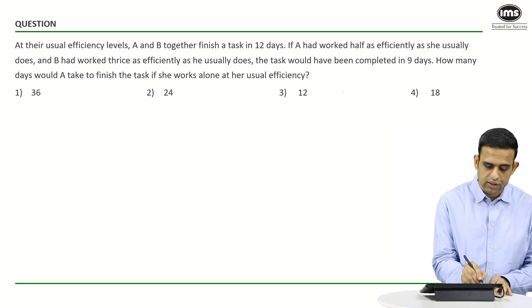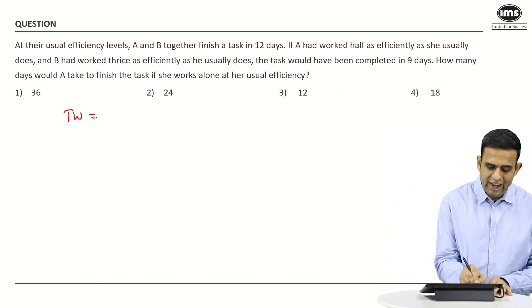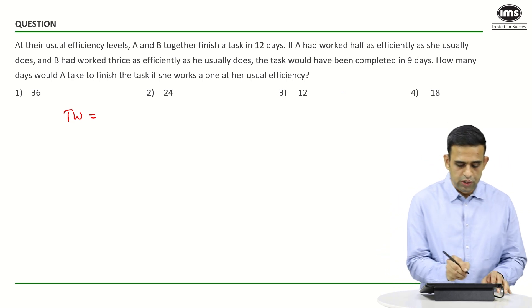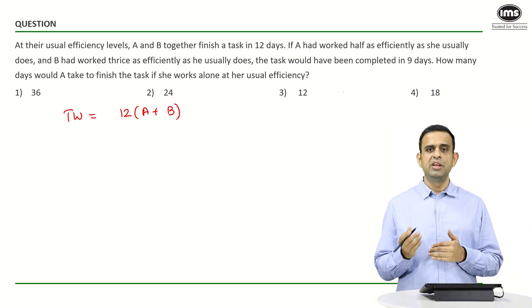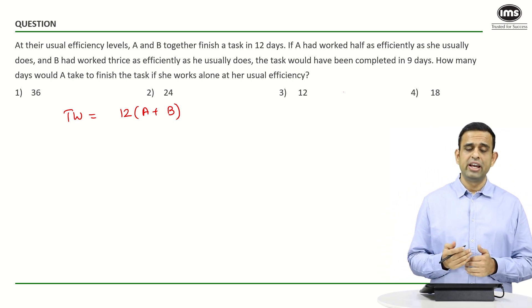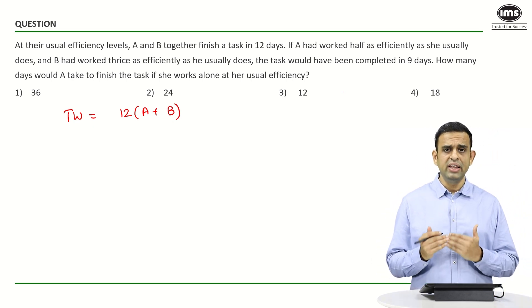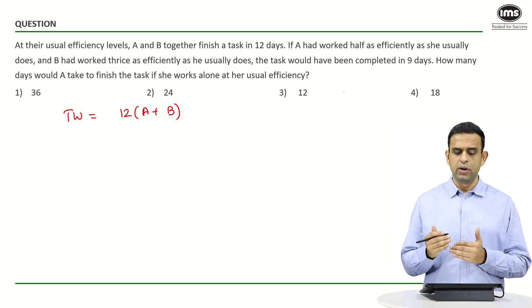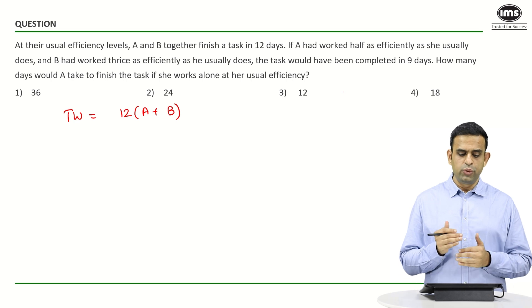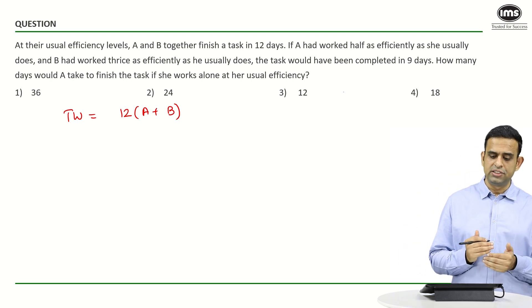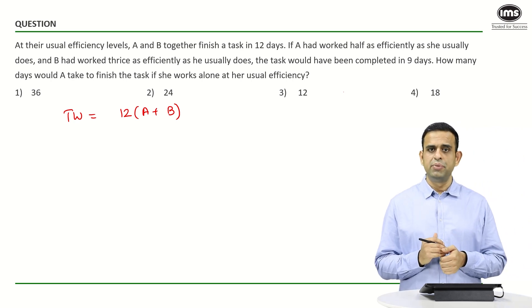One way to tackle this question is to assume A and B represent the amount of work done by A and B in one day. So total work in man-days should be 12(A + B). If A had worked at half his efficiency and B at thrice his efficiency, what does this mean?